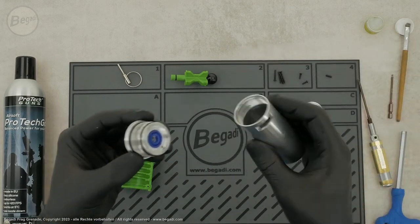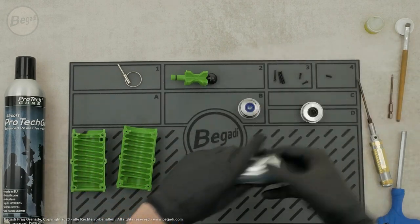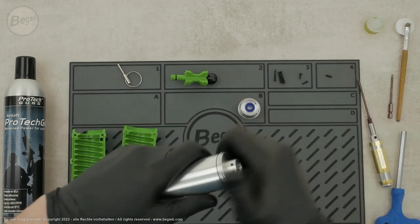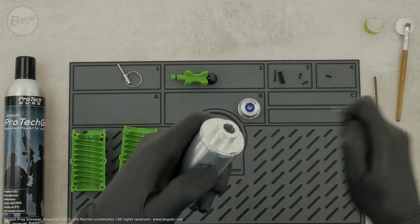After inspecting, cleaning, and lubricating all parts, you can reassemble the grenade. Hand-tighten all threads so that the seals are not excessively compressed, or the threads are damaged.